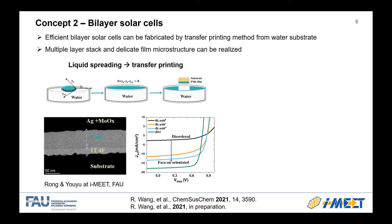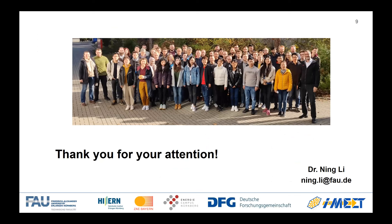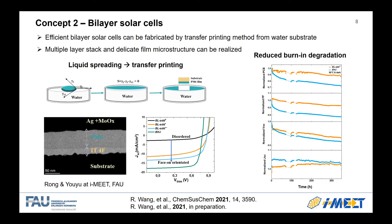By tuning the microstructure of the polymer layer, comparable efficiency was achieved for these bilayer solar cells relative to the corresponding bulk heterojunction solar cells with similar efficiency. For such a concept, we minimized the interface between donor and acceptor, which is beneficial for device stability. Indeed, the fill factor degradation caused by instability at the donor-acceptor interface could be minimized by using this bilayer concept. Although this is an old concept, in the current situation it is worthwhile to revisit it to get both stable and efficient solar cells. Thanks for listening.